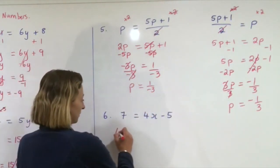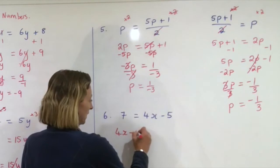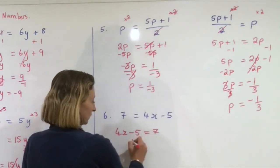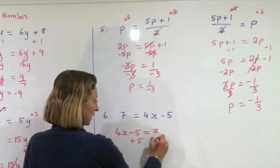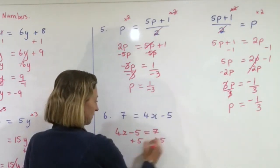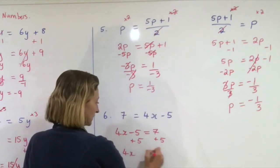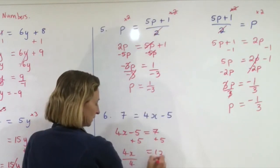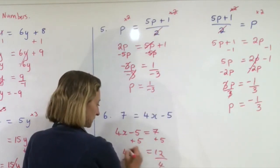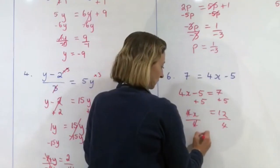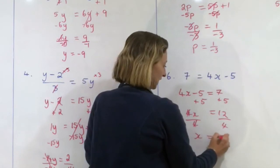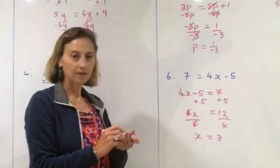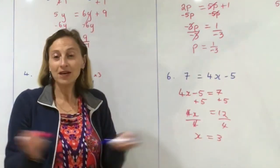I'm going to swap this one around. Plus 5 to both sides — 4x equals 12. Divide both sides by 4, and x equals 3. And we're done.